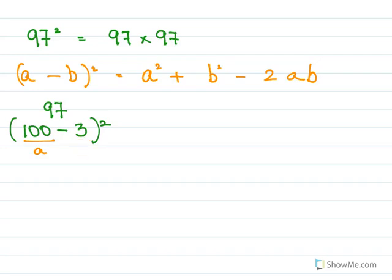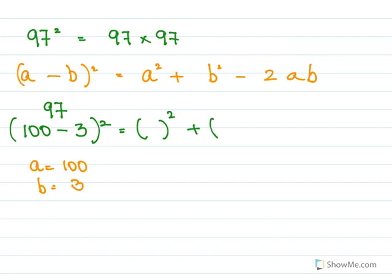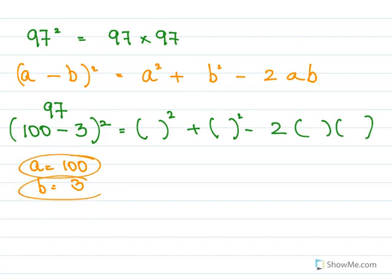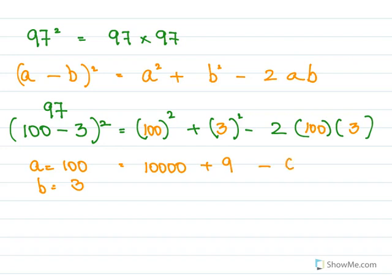We have a = 100 and b = 3. So (a - b)² = a² + b² - 2ab. We have 100² = 10000, b² = 3² = 9, and 2ab = 2 × 100 × 3 = 600. So 10000 + 9 - 600 = 9409, and therefore 97² = 9409.